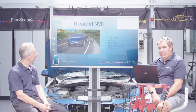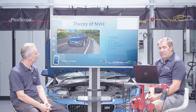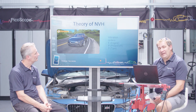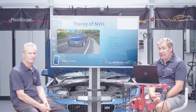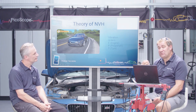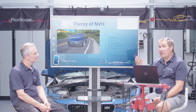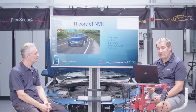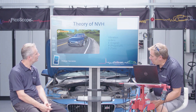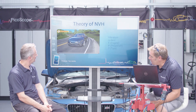We categorise vibration orders into three types: E for engine order vibrations, P for prop shaft, and T for tyre. We also have unknown vibrations. Starting to think about these first three will really help you when you start to see the data. There's a short animation that shows quite nicely how these three work together.